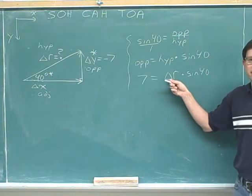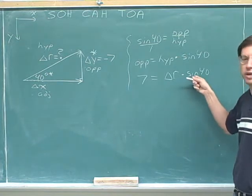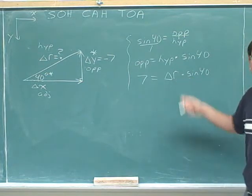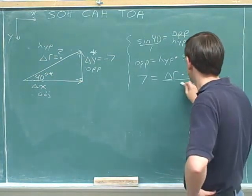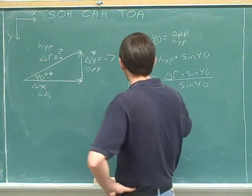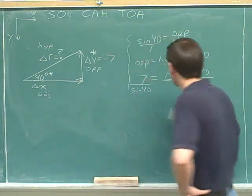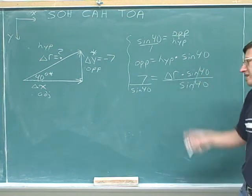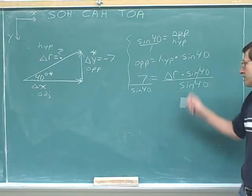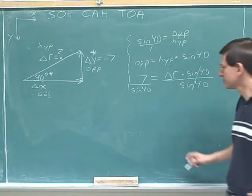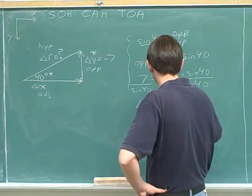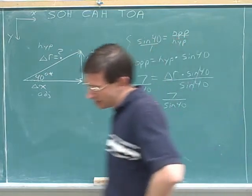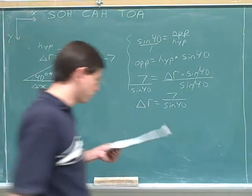And then our hypotenuse would be delta R times sine 40. Well, we've got to get the delta R by itself. And the way to do that is by getting the sine 40 out of here. How is the sine 40 attached to the delta R? It's attached by multiplication. So the way to get rid of it is to do the opposite, which is division. So we have to divide both sides by sine 40. We do not take any inverse sines here. We just use division. And now we have 7 divided by sine 40, which equals 10.9.